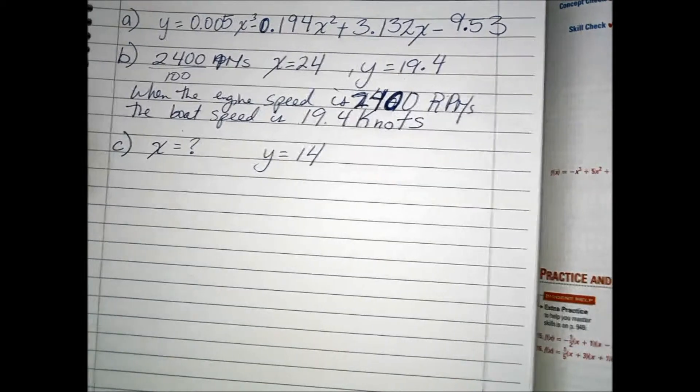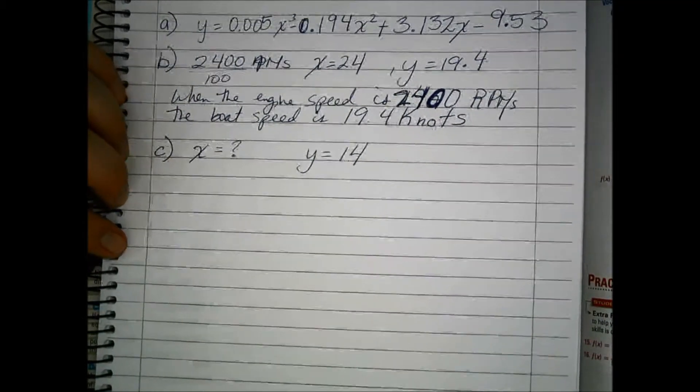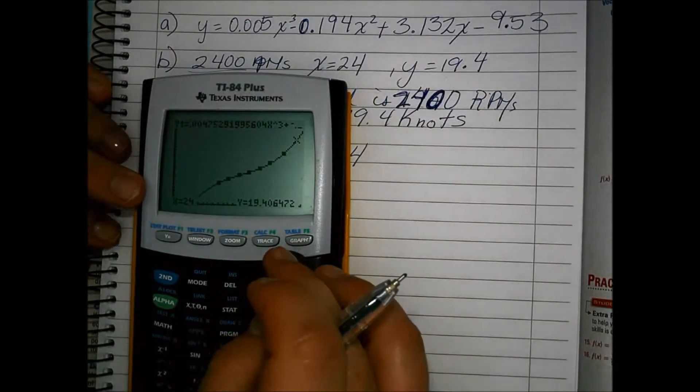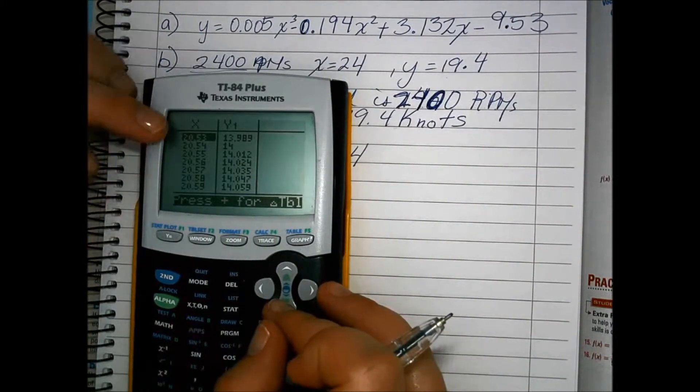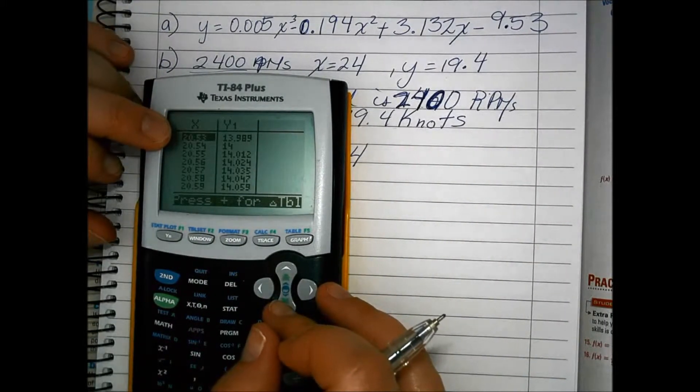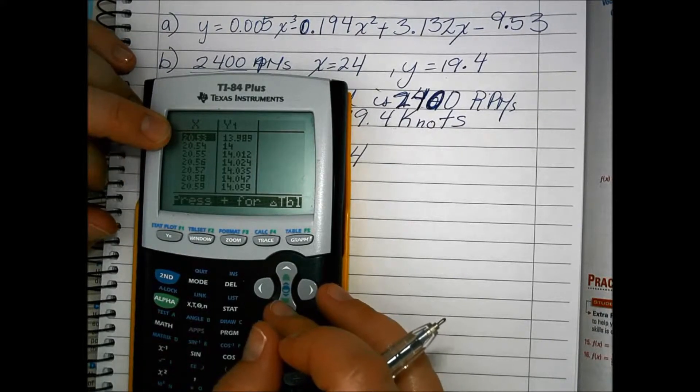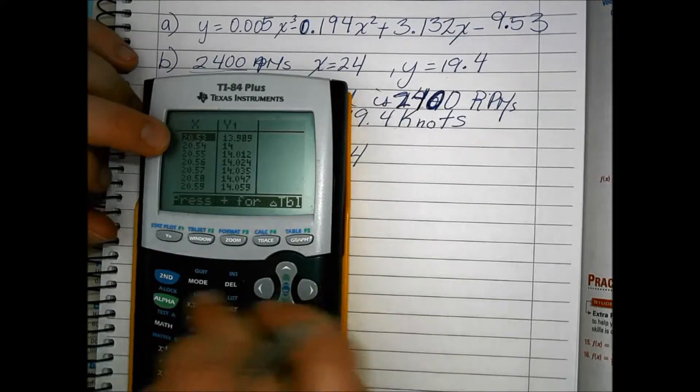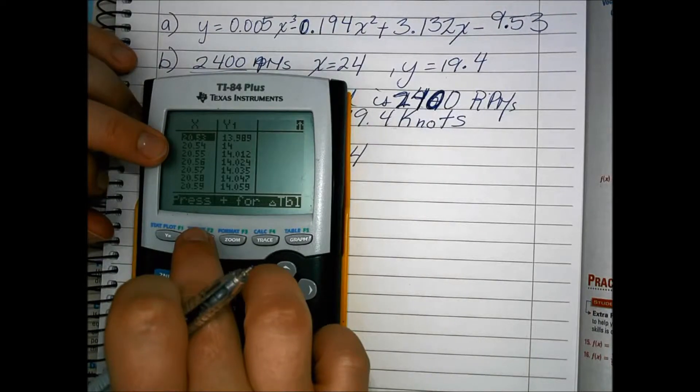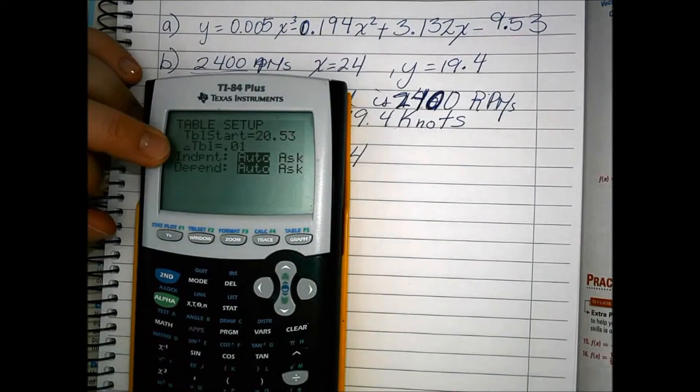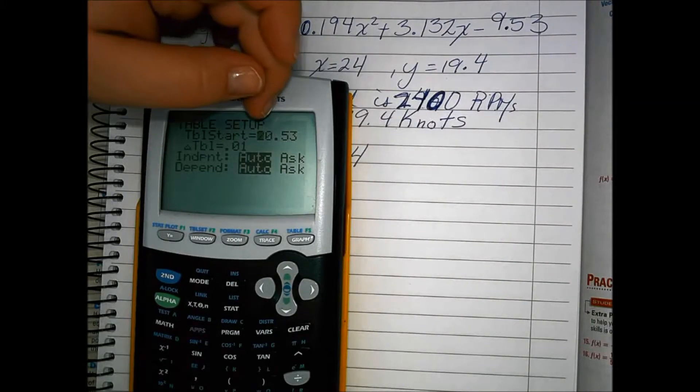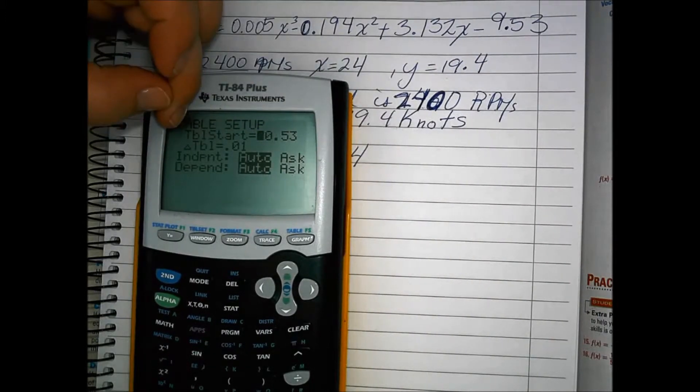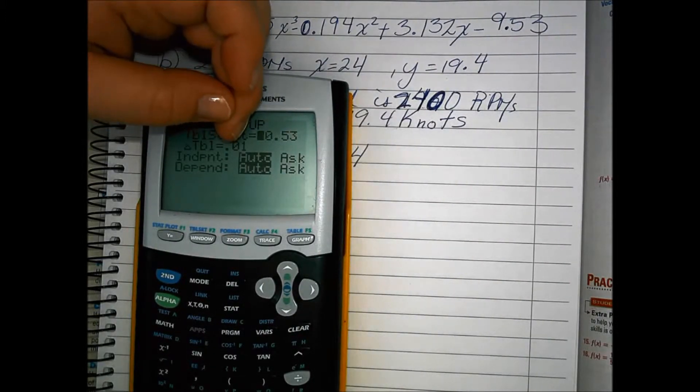There's a couple ways to do this. One way is to use the table of data. So if we go to our table, I actually happen to have this all set up for this problem, so it didn't take as long. We can see that when we go to our table set, which is 2nd window, then we can start the table at 20.53 and then have the change of the table as .01.